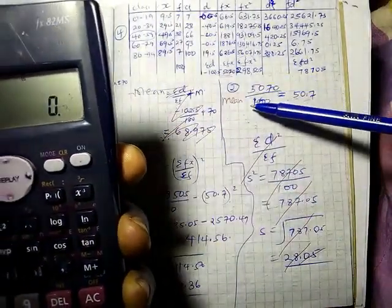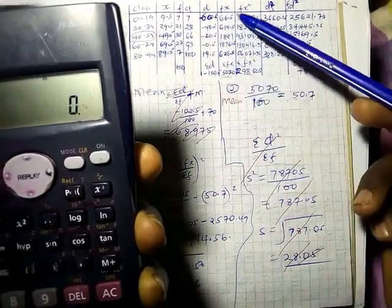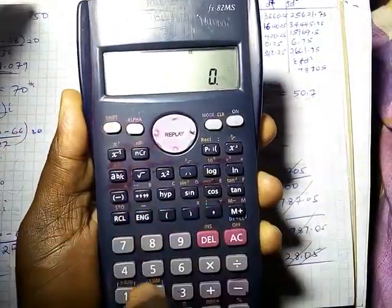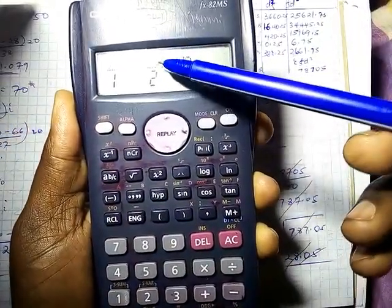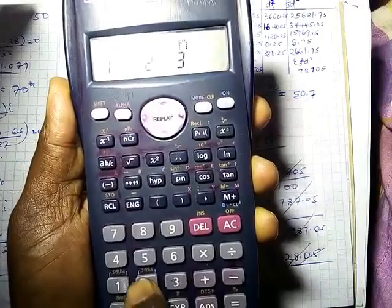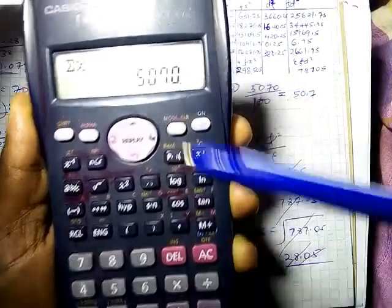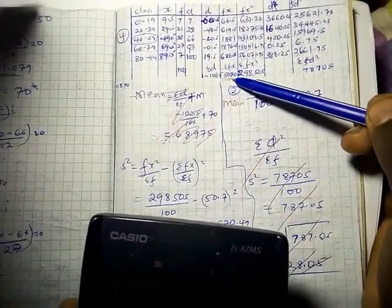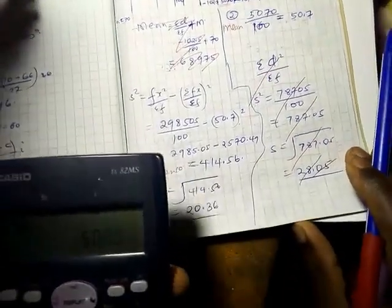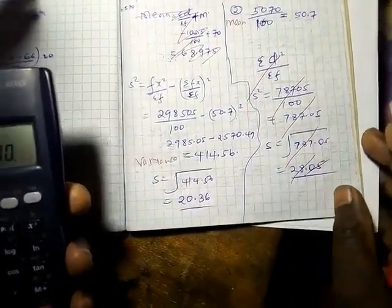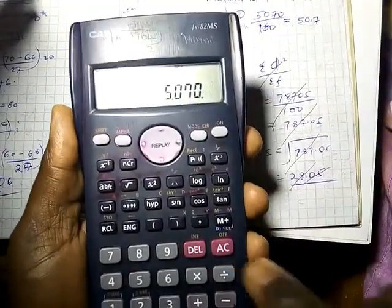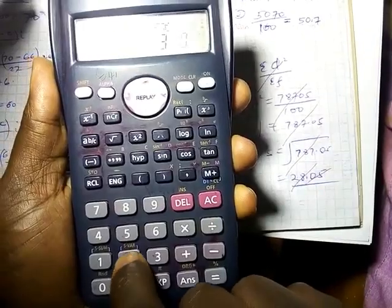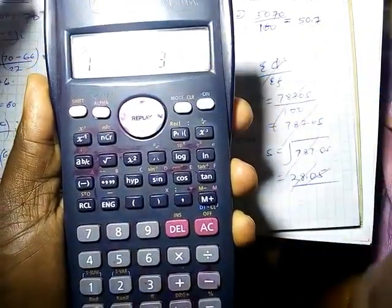You remove. You go next. I want to check what? Mean. Mean 50.70 divided by 100 which is 50.7. So mean, shift 2, number 1 plus 1, answer 50.7. Next I want what? I can even get total fx. Total fx, shift 1, then total fx.